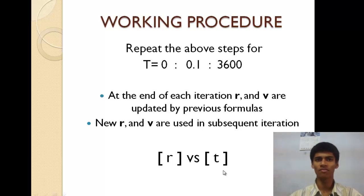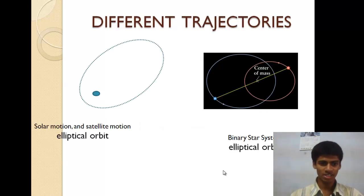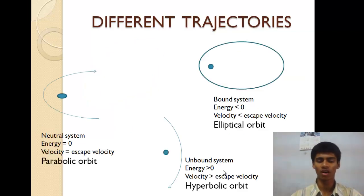When I plotted them, I found my trajectory. Here are different trajectories: solar motion, satellite motion, binary star system, all of them have elliptical orbits.